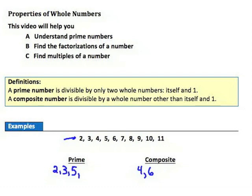Seven: the only numbers that divide evenly into seven are itself and one, so seven is prime. Eight: both two and four divide into eight, so eight is a composite number. Nine is a little bit tricky — you might think prime, but remember that three divides evenly into nine, so nine is composite. Ten: both two and five divide into ten, so it's composite. Finally, eleven is a prime number because it can only be divided by itself and one.